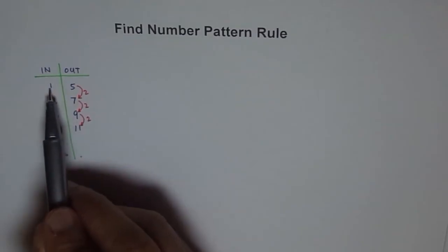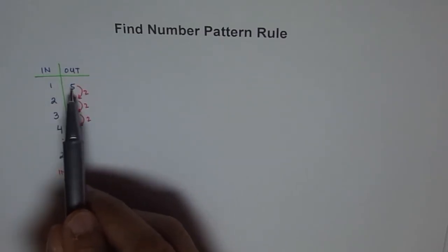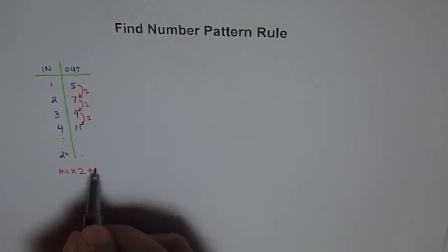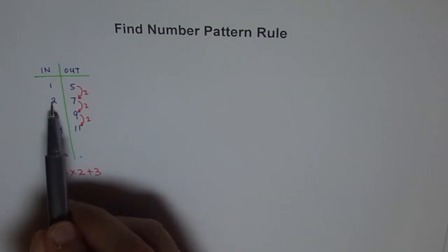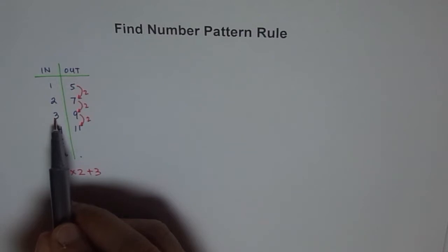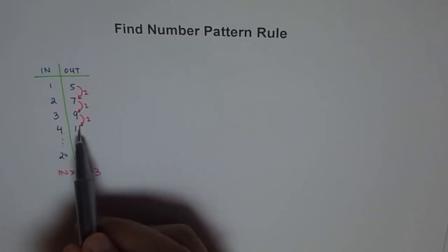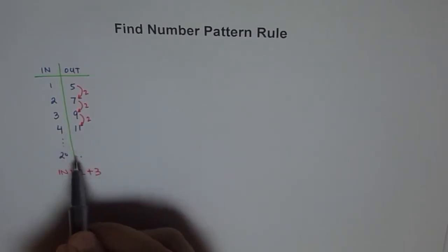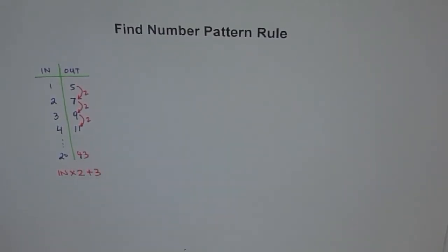Let's check: 1 times 2 is 2, but we need 5. To get 5 from 2, we add 3. So let's try input times 2 plus 3. Check with 2: 2 times 2 is 4, plus 3 is 7 — it works! 3 times 2 is 6, plus 3 is 9 — it works! 4 times 2 is 8, plus 3 is 11 — it works! So for input 20: 20 times 2 is 40, plus 3 is 43.